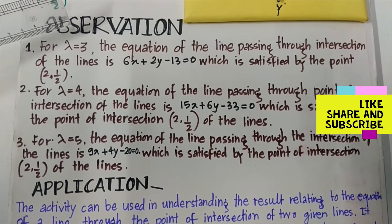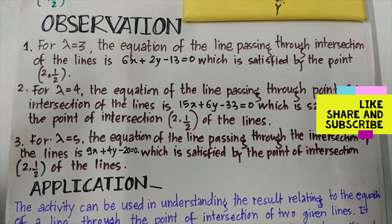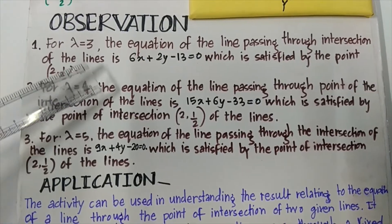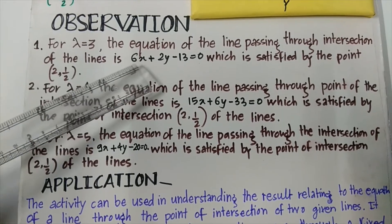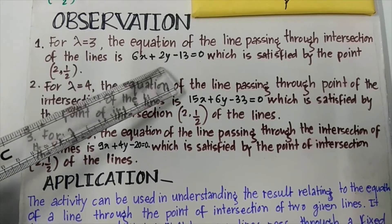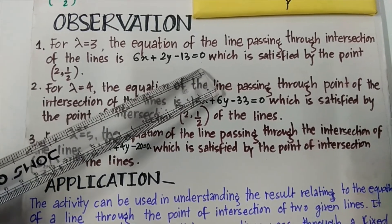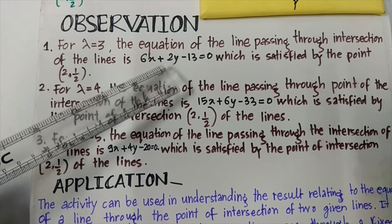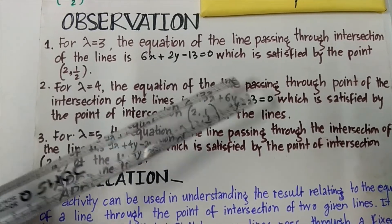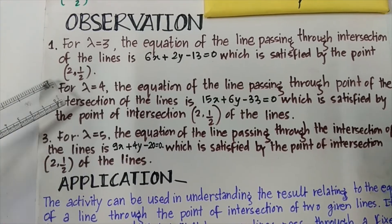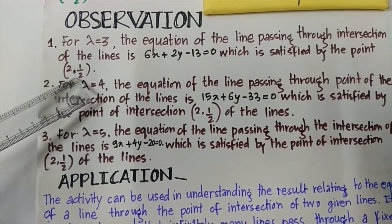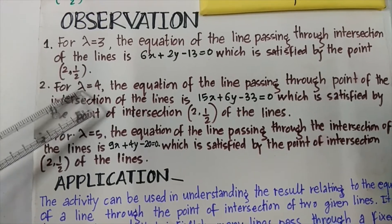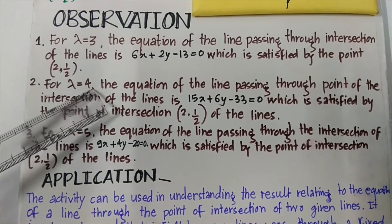For lambda equals to 4, the equation of the line passing through the intersection of the lines is 6x plus 2y minus 13 equals to 0. On solving the equation, this also satisfies the point of intersection (2, 1/2).